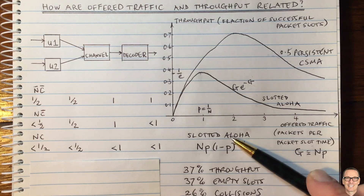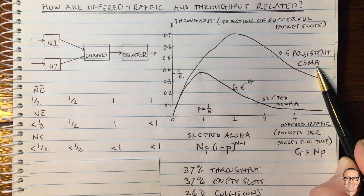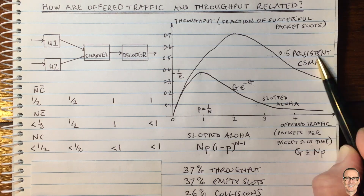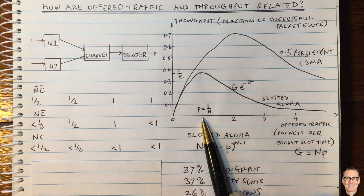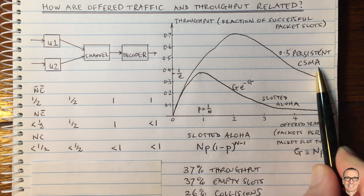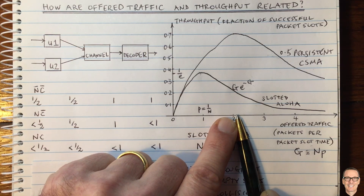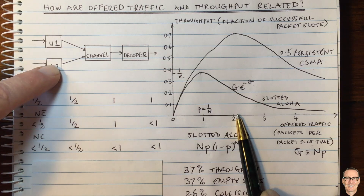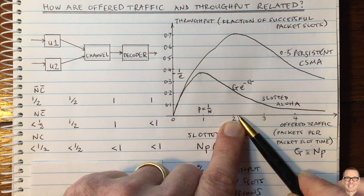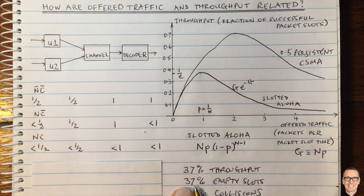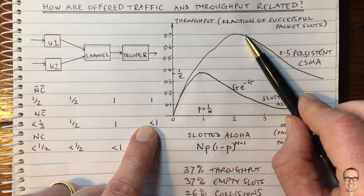So we start thinking — can we do better than slotted Aloha? And in fact, we can. Here's another curve for what's called 0.5 persistent CSMA. For this protocol, the offered traffic is actually best to be bigger than one — around two. That means even with perfect coordination you could not send that many packets without collisions. However, in this randomized protocol, sending at that higher offered traffic rate means you don't get as many empty slots, so overall the throughput improves and is better than slotted Aloha — up to 0.7 throughput.